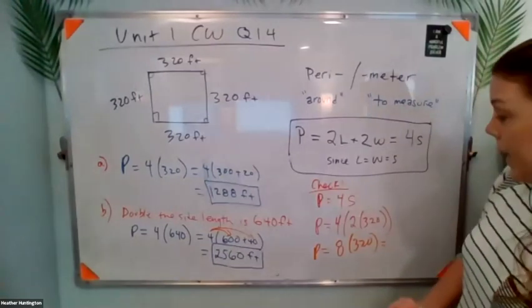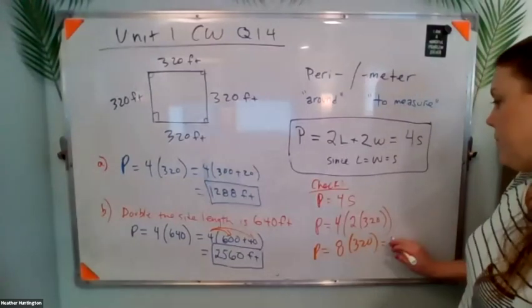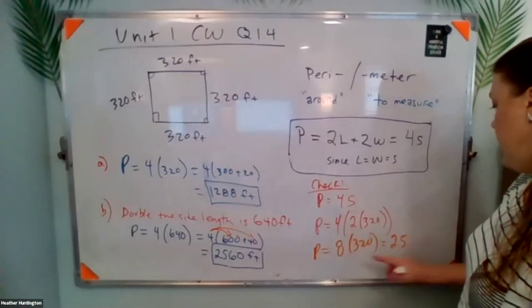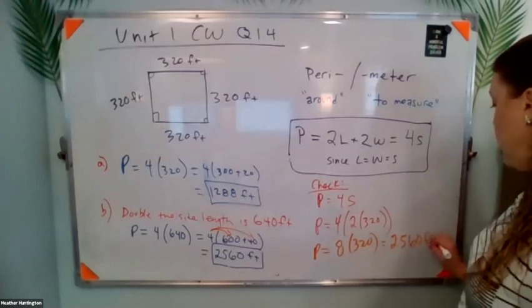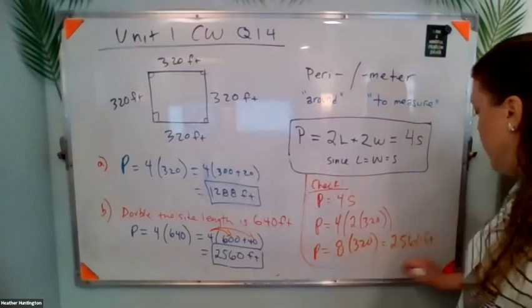And you can check that that's going to be about 2400 to 2560. Eight times two is 16. So this does check out. So this is a different way of solving this.